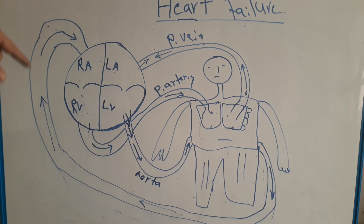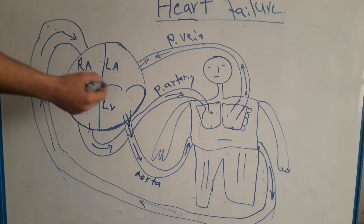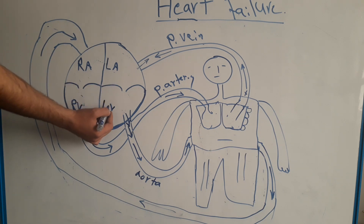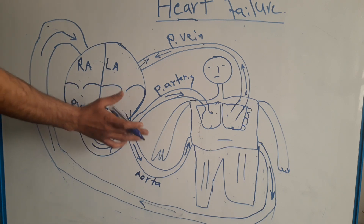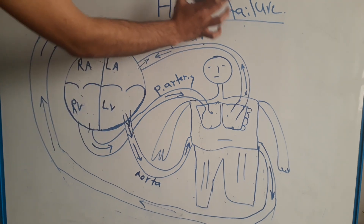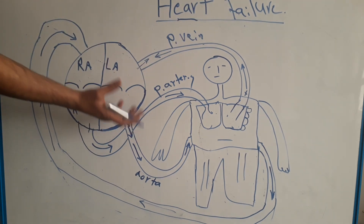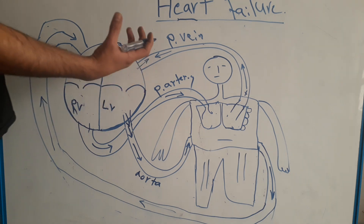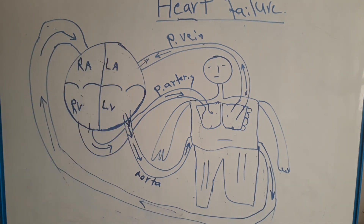That is the normal physiological circulation of blood from the heart to the body and back. So what happens in heart failure? Heart failure means the heart cannot pump enough blood to the circulation. Normally the left ventricle pumps blood, but in heart failure both ventricles cannot pump enough blood to the circulation.